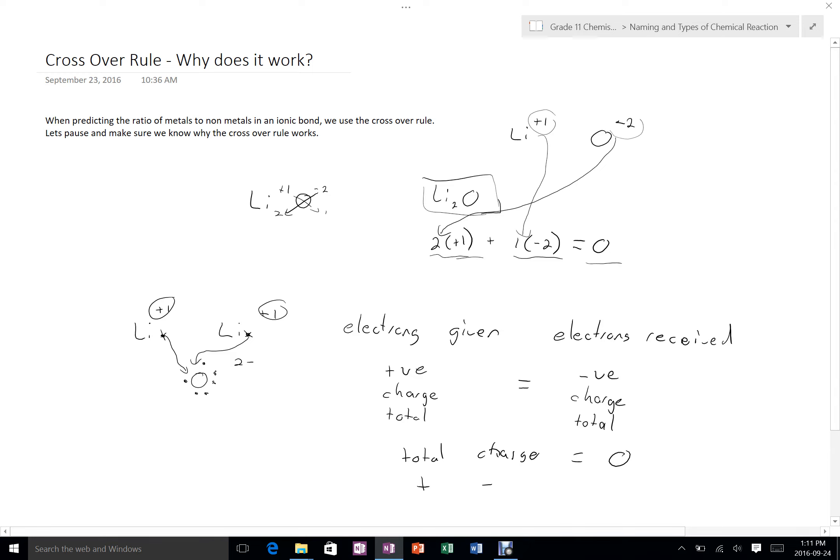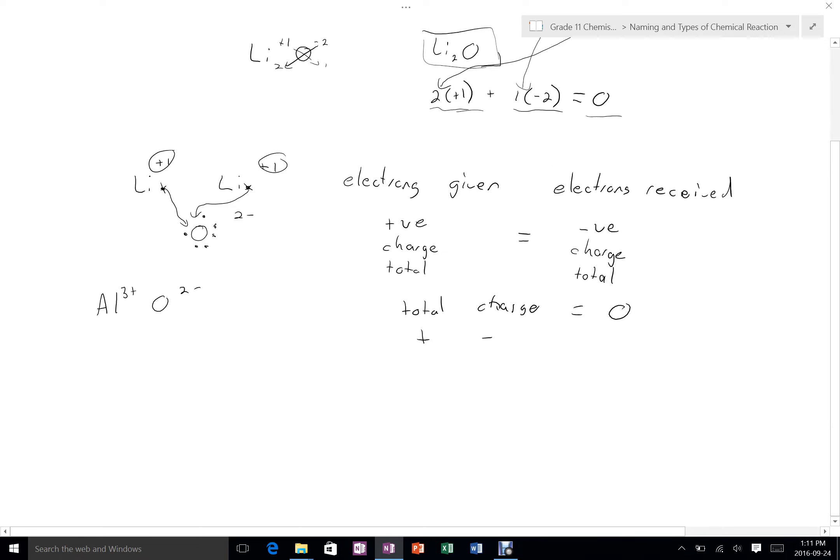This will work no matter what numbers we had, right? Let's say we had aluminum 3 plus and oxygen 2 minus, and we want to figure out how to make it neutral. So we're going to have 3 pluses here multiplying by something, adding to 2 minuses here multiplying by something. And so what we can see is if we cross over or switch the numbers, we'll end up with 2 times 3, which has to be equal to 3 times 2. And since we know the order that we multiply in doesn't matter, the plus 6 and the minus 6 always end up being the same and the overall molecule ends up being neutral.